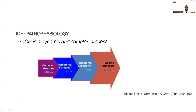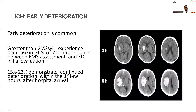The pathophysiology of intracranial hemorrhage is a dynamic and complex process. Due to hypertension, there is damage to the vascular endothelium, resulting in rupture of blood vessels when blood pressure is high. Blood leaks into the brain parenchyma and forms a hematoma. With persistently elevated blood pressure, there is a persistent leak leading to hematoma expansion, which occurs around 1 to 24 hours. We commonly observe early deterioration in ICH patients — more than 20% will experience a drop in GCS of 2 or more between EMS and the initial evaluation.